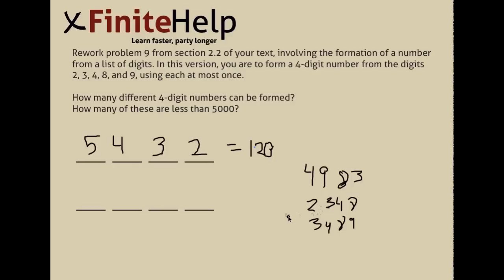Okay, so we can take a look at these numbers. And obviously for the numbers to be less than 5,000, it's going to have to start with a number less than 5. So we can go up here and look at our five possible numbers to choose from and see that there's three digits that are less than 5. And that's 2, 3, and 4.